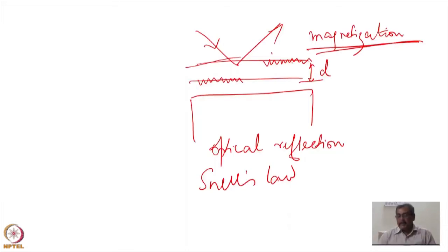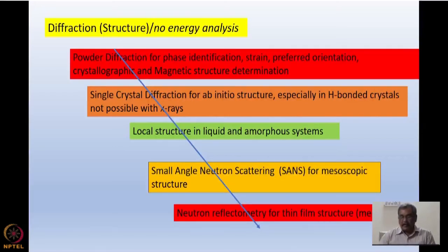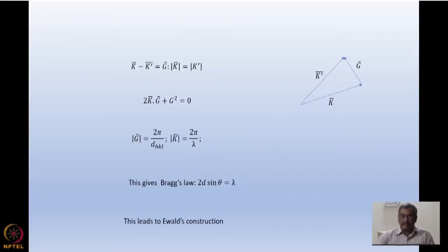All this we will discuss when we discuss neutron reflectometry, which will come under the heading of mesoscopic length scales. So this will be my flow: I will start with powder diffraction, then briefly cover single crystal neutron diffraction, then liquid and amorphous systems and local structure, small angle neutron scattering, and neutron reflectometry for thin film structure — all under the heading of diffraction or structure at various length scales.